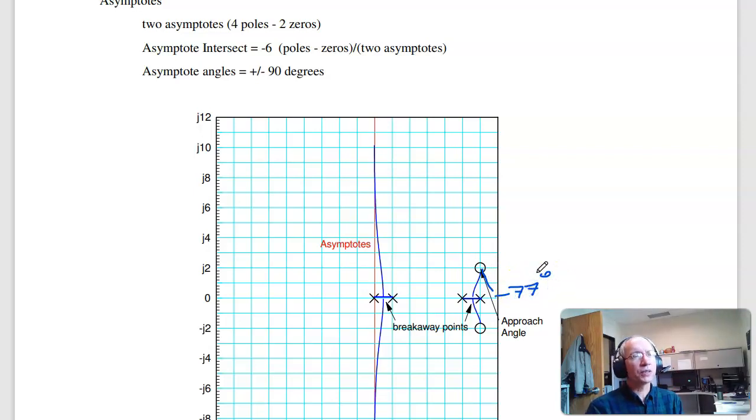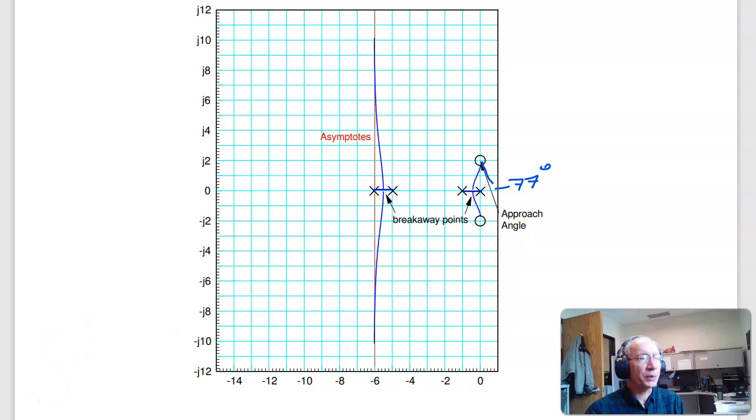So that's sketching a root locus. The root locus plot just tells you how the poles are shifting. Next we will look at designing compensators given the root locus plot. But that's homework set number 7 for ECE 461/661.